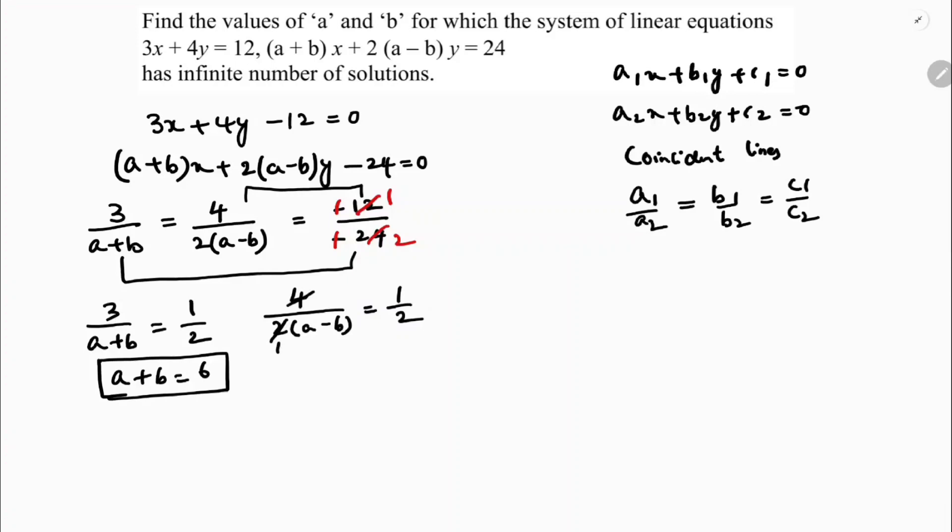Now here 4 by 2(a minus b) equals 1 by 2. So if we will cross multiply, a minus b is 2 times 2 is 4.